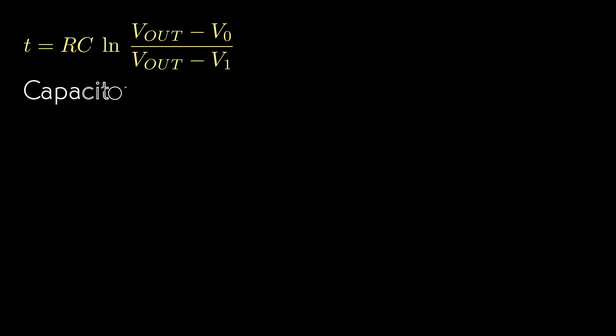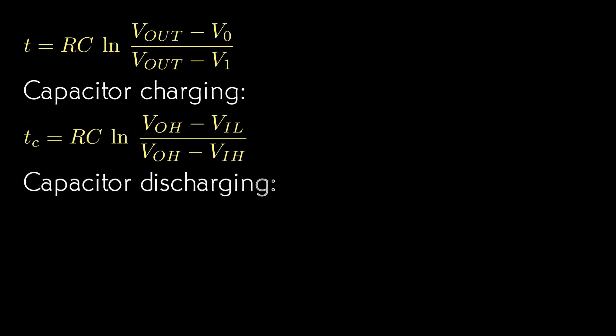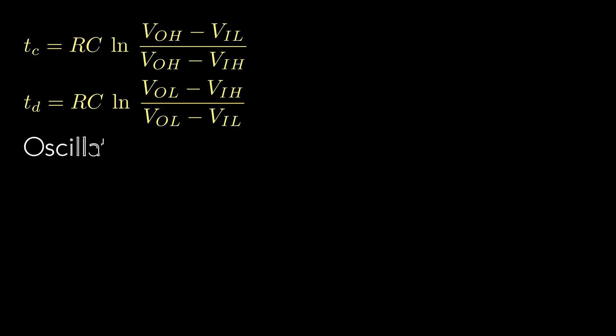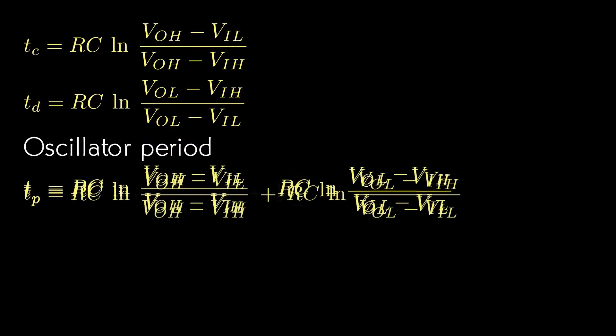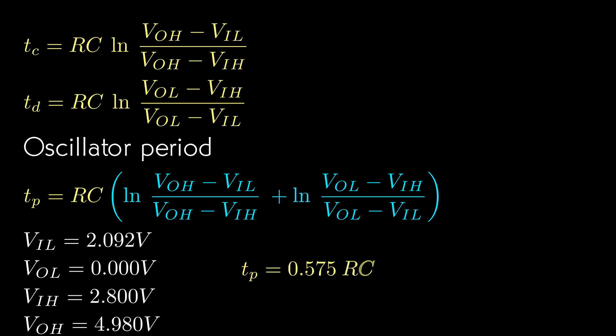During the part of the cycle when the capacitor is charging, the inverter output is V sub OH and the capacitor voltage starts at V sub IL. That part of the cycle will end when the voltage reaches V sub IH. During the part of the cycle when the capacitor is discharging, the inverter output is V sub OL and the capacitor voltage starts at V sub IH. That part of the cycle will end when the voltage returns to V sub IL. The oscillator period is just the sum of these two values. Factor out the RC time constant and the highlighted factor contains only the constants that we just measured with the oscilloscope cursors. Plugging in those numbers gives a simple formula for the period and frequency of our oscillator. This basic calculation works for any Schmitt trigger. Plug in the threshold and output voltages and you get the formula.